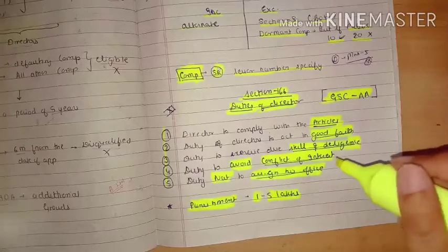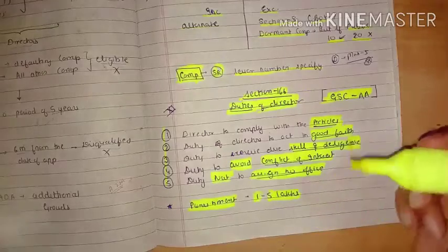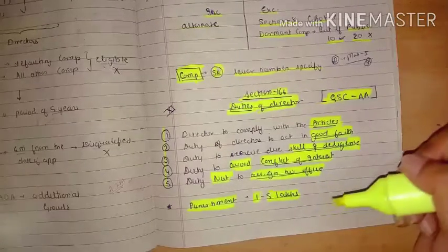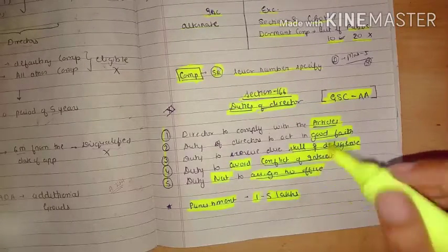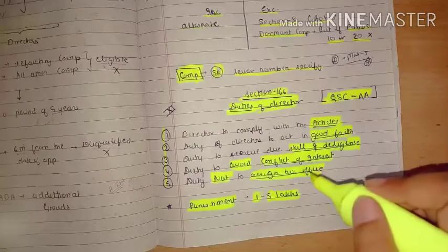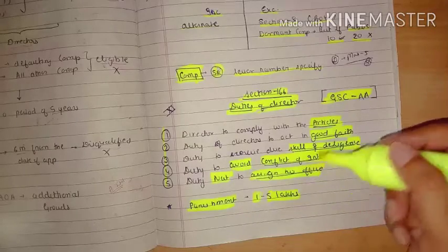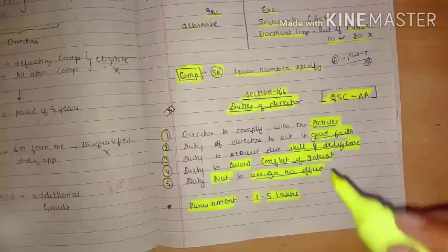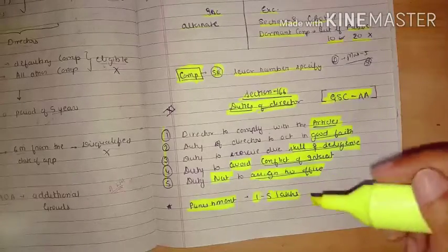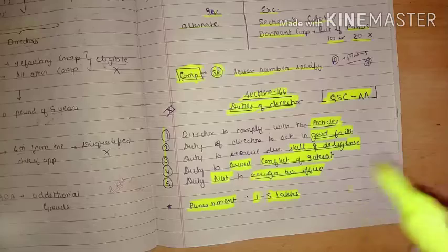Not to assign the office means that it should not leave the office to anyone else. It should not be assigned to anyone else. There is a procedure. It can be vacated. The director can leave the office but cannot assign the office to anyone else. Because it doesn't have the power to assign the office.